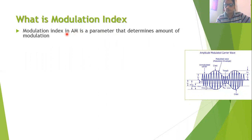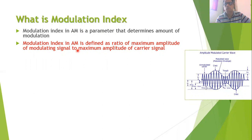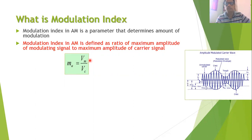Modulation index in AM is a parameter that determines the amount of modulation. It is defined as the ratio of the maximum amplitude of the modulating signal to the maximum amplitude of the carrier signal. We use the symbol m_a, and the formula is m_a = Vm / Vc, where Vm is the maximum amplitude of the modulating signal and Vc is the maximum amplitude of the carrier signal.